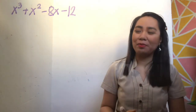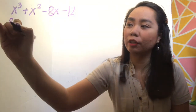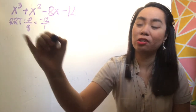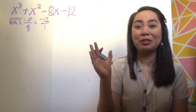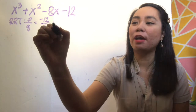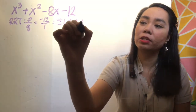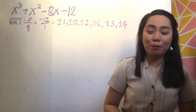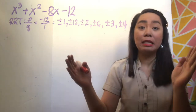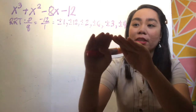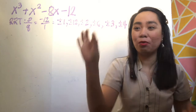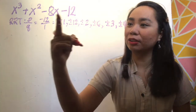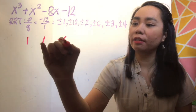Now let's try problem number two. To factor this out, use the rational root theorem: p over q. The constant is negative 12 and the leading coefficient is 1. Since the leading coefficient is 1, there is no fractional value for x. Factor 12: positive negative 1, positive negative 12, positive negative 2, positive negative 6, positive negative 3, and positive negative 4. Write out the coefficients: 1, 1, negative 8, and negative 12.